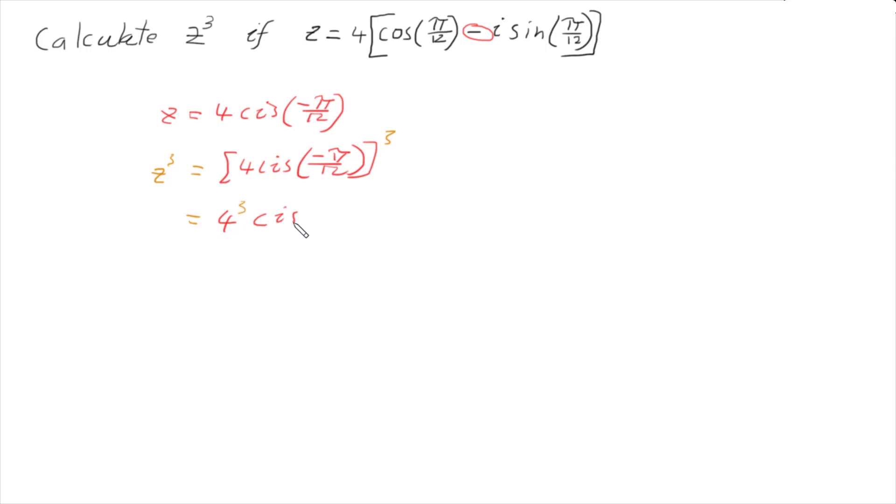And I multiply the angle by the power of 3, so 3 times negative pi over 12. So now 4 cubed, well, that is 64.